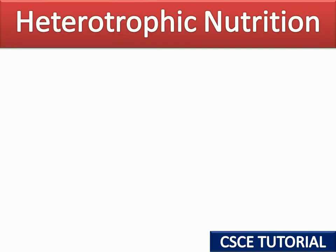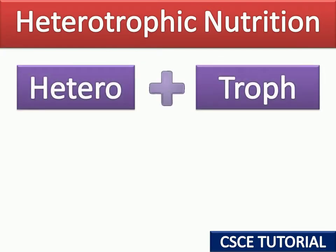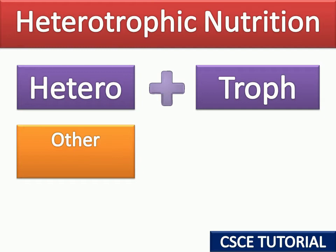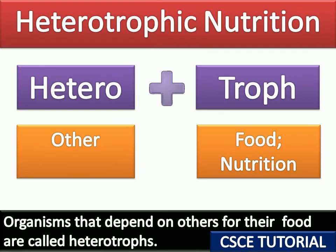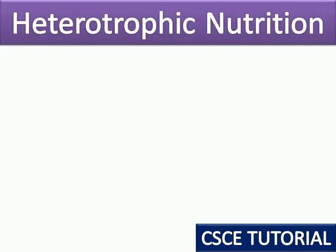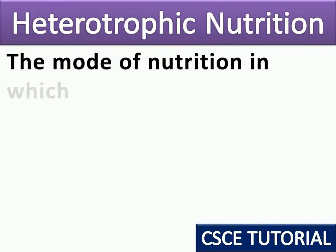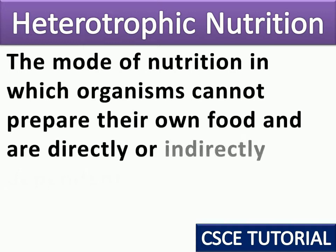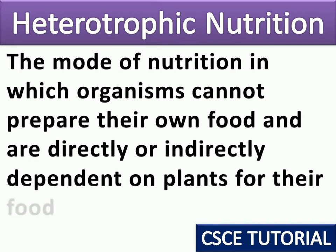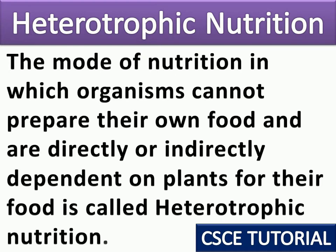Heterotrophic nutrition is made of two words: 'hetero' meaning other, and 'troph' meaning food and nutrition. Organisms that depend on others for their food are called heterotrophs. The mode of nutrition in which organisms cannot prepare their own food and are directly or indirectly dependent on plants for their food is called heterotrophic nutrition.